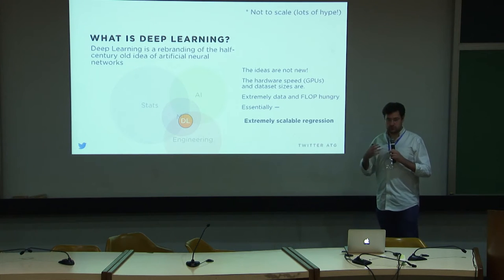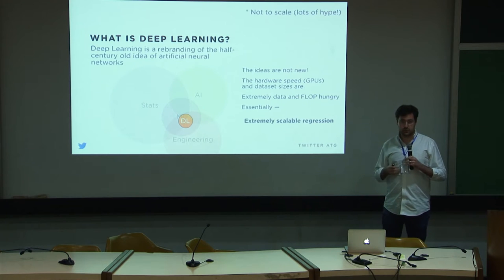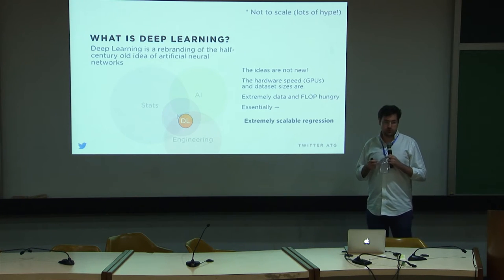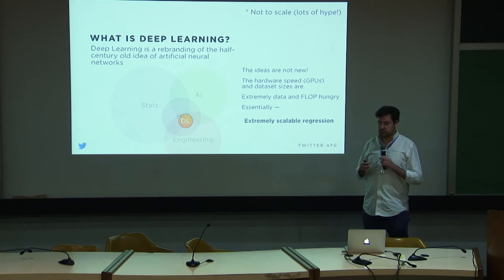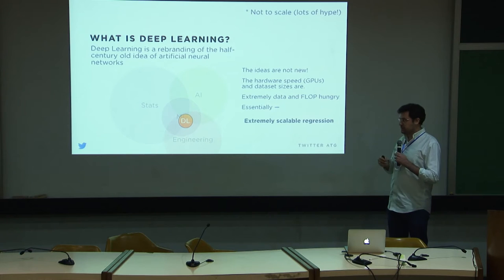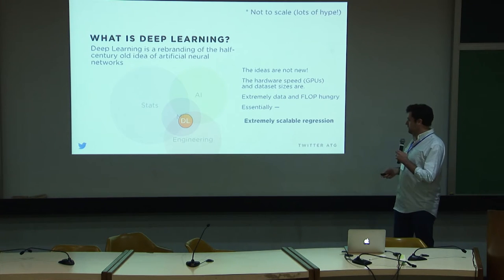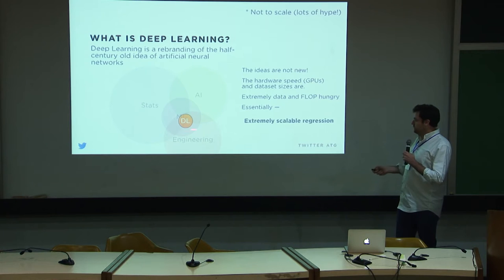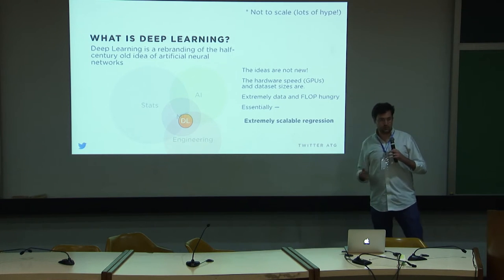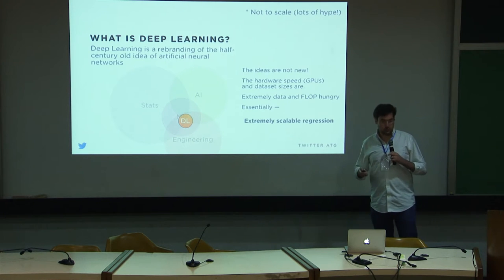Deep learning is kind of a sport of kings. Large industrial companies care about it because they have enormous datasets that are sometimes impractical for people with single machines to deal with. That's why there's huge investment in this — it's something that people at scale can actually play with and get big wins out of. But essentially, deep learning when you boil it down is just a really scalable regression. It's not super fancy on the inside; it just works on bigger data, but it costs more to do so.